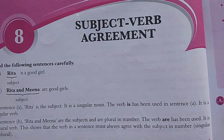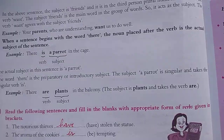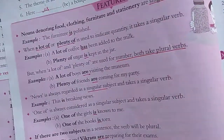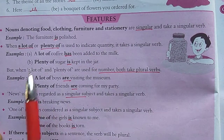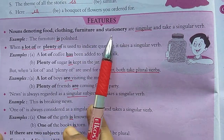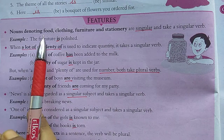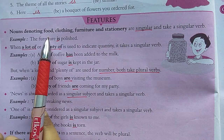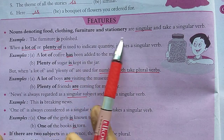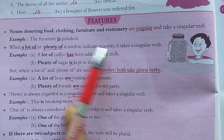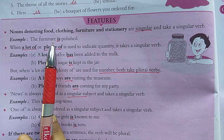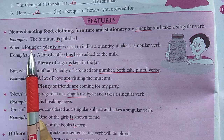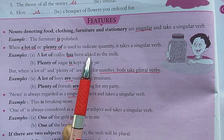Some important points to remember: nouns denoting food, clothing, furniture, and stationery are considered singular and take a singular verb. For example, 'the furniture' — we don't divide it; all wooden work is considered furniture as one unit. So we use 'is': 'The furniture is...'